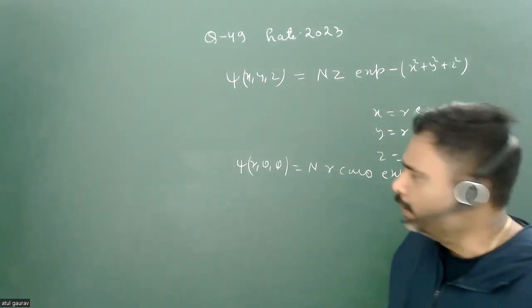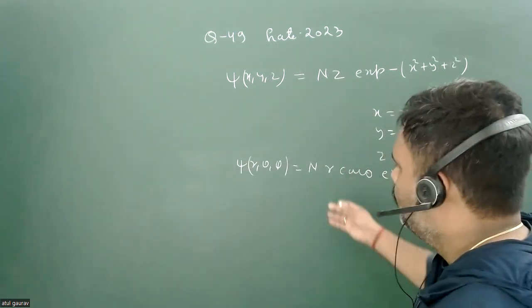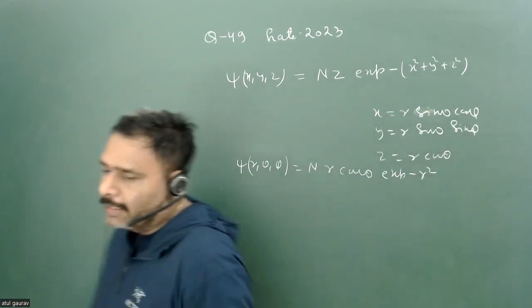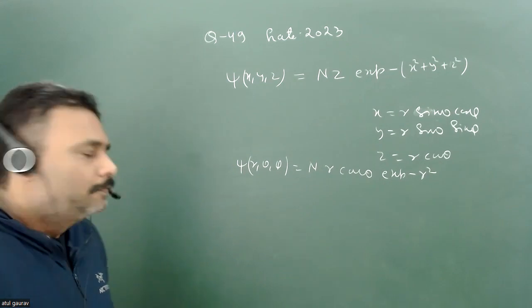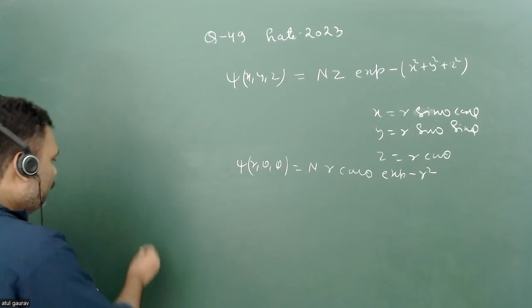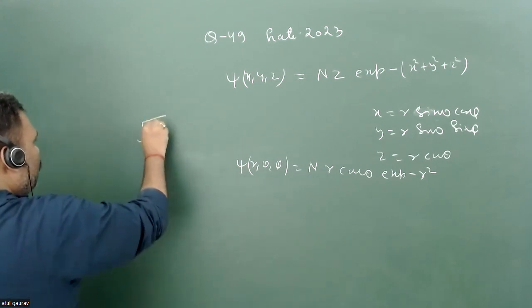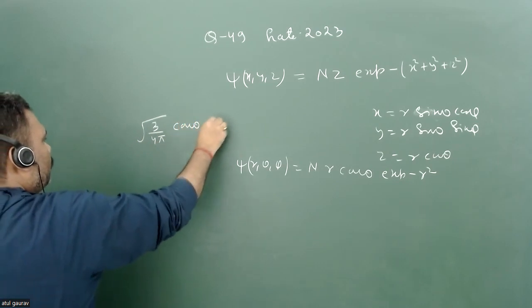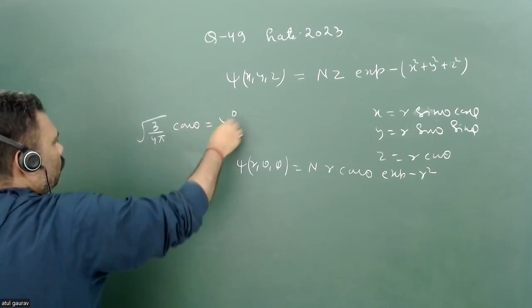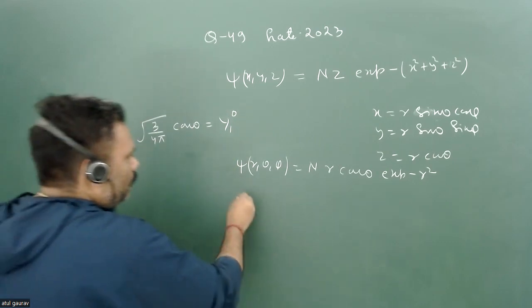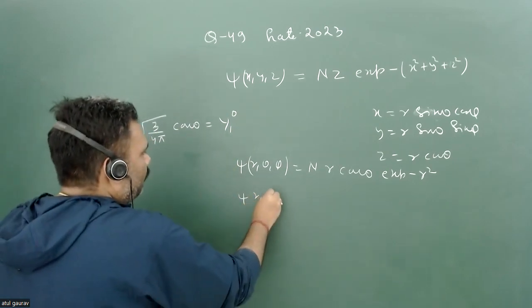Now when we are writing it in spherical polar coordinates, we can easily write cos theta as a function of a spherical harmonic Y_1,0. It is also given that root 3 upon 4 pi times cos theta equals Y_1,0. So obviously we can write this cos theta as psi(r, theta, phi).